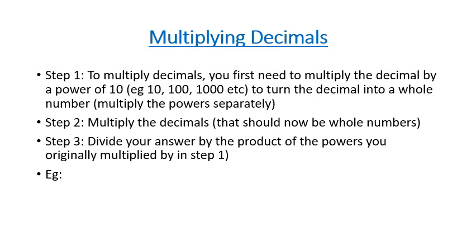When you're multiplying decimals, the first thing you need to do is multiply the decimal by a power of 10 — essentially just move the decimal place — to turn that decimal into a whole number. Once you've got both decimals into whole numbers, you just multiply them out normally, and then you divide your answer by the product of the powers you originally multiplied in step 1, essentially moving the decimal place back however many times you moved it previously.